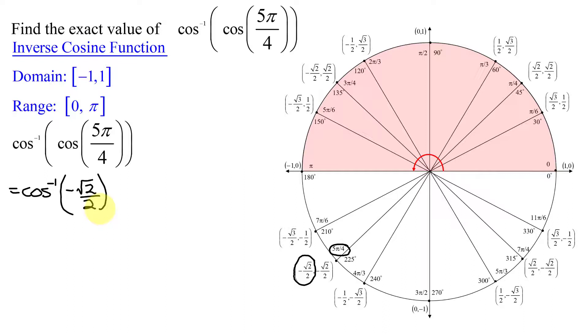So now all I have to do is find the inverse cosine of negative the square root of 2 over 2. Remember the way we often do that is we're looking for an angle, set it equal to θ. What does this statement mean? This statement means that the cosine of θ equals negative the square root of 2 over 2.